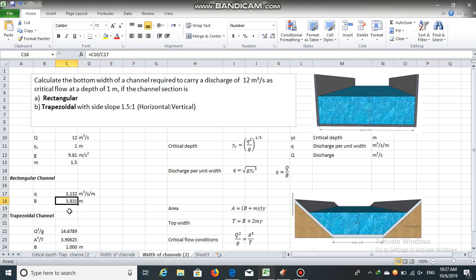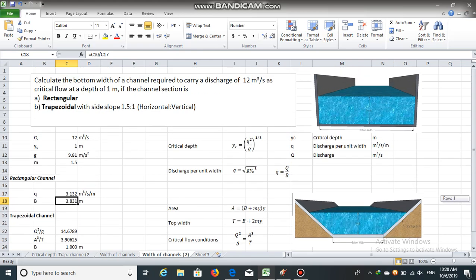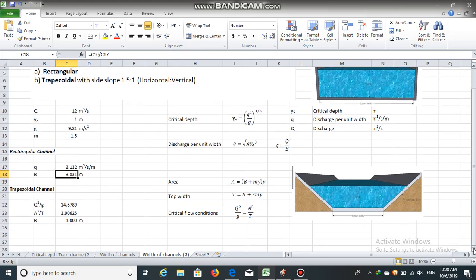Now let us obtain the bottom width of the trapezoidal channel section carrying discharge of 12 meter cube per second. The side slope is given as 1.5.